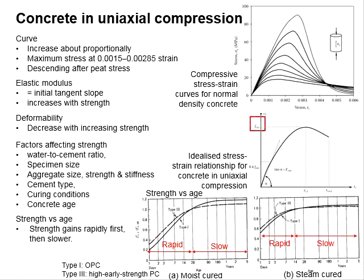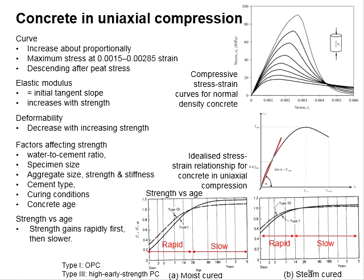The FCM represents the mean concrete compressive strength. Next, we need to find a point of 0.4 times FCM, which is about 40% of the FCM. Draw a horizontal line to intersect the stress-strain curve, then create an inclined line passing through the 0.4 FCM point. The gradient here will represent the elastic modulus of the concrete.